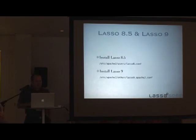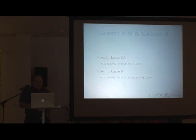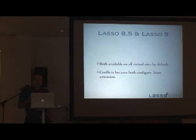I'm assuming here that you've installed both Lasso 8.5 and Lasso 9 — and this is using the default Apache 2 installation on Mac OS X. Lasso 8.5 will install its lasso8.conf file, and Lasso 9 will install its lasso9.patch2.conf file. The problem is that both of those are attempting to grab the .lasso file extension for all virtual sites — they both install at the root of the configuration file.